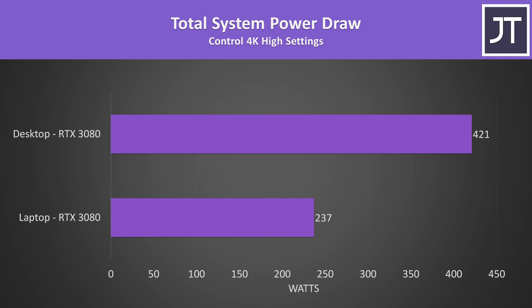The desktop system is definitely using more power compared to the laptop — both were measured at the wall, so this is the total power that the entire machine is using and not just the GPU. In Control at 4K, a GPU-heavy game at a high resolution, the desktop system was drawing around 78% more power from the wall, a larger difference compared to the performance boost on offer, meaning the laptop is a bit more efficient.